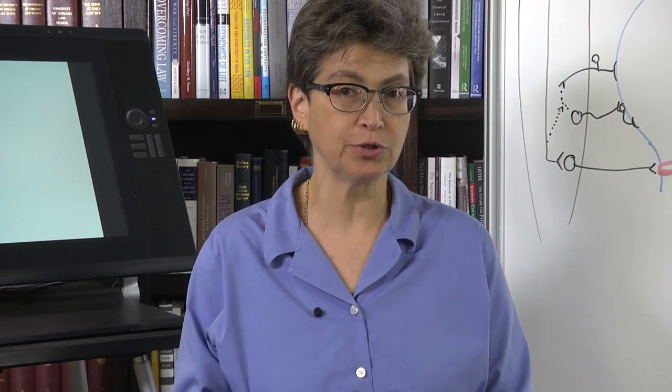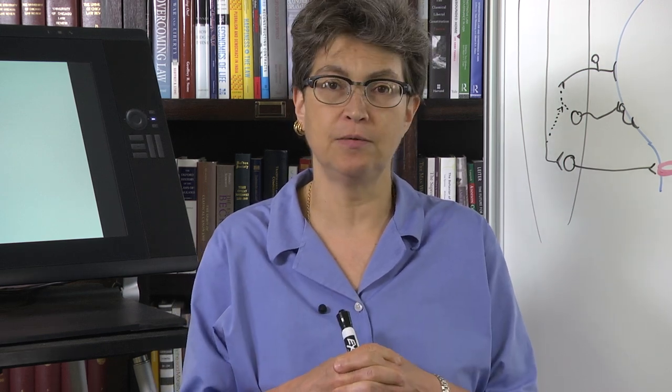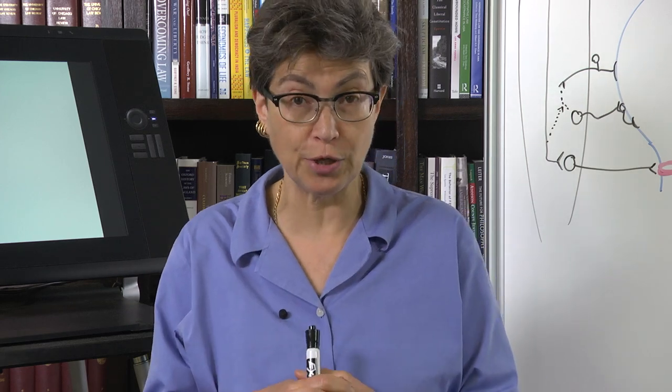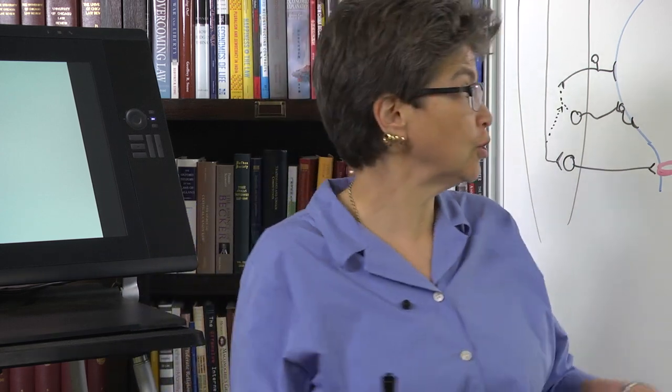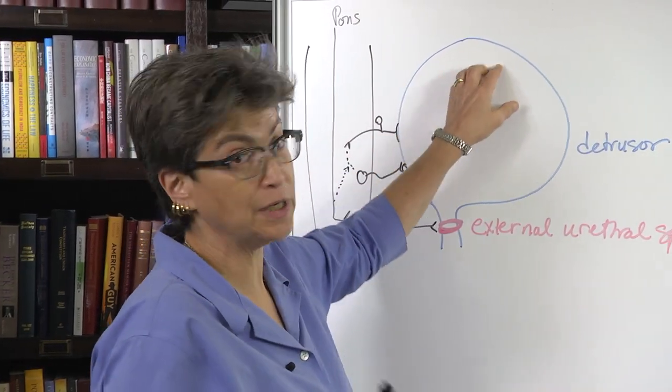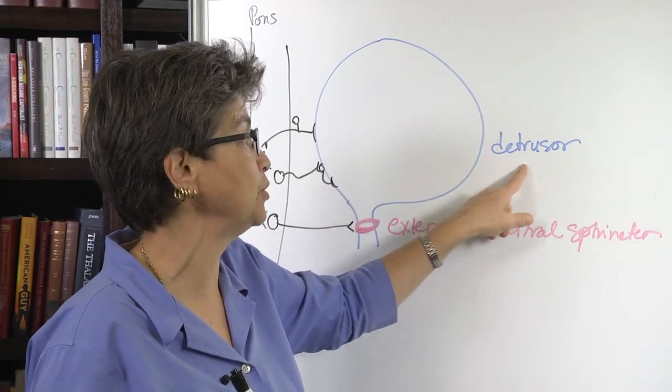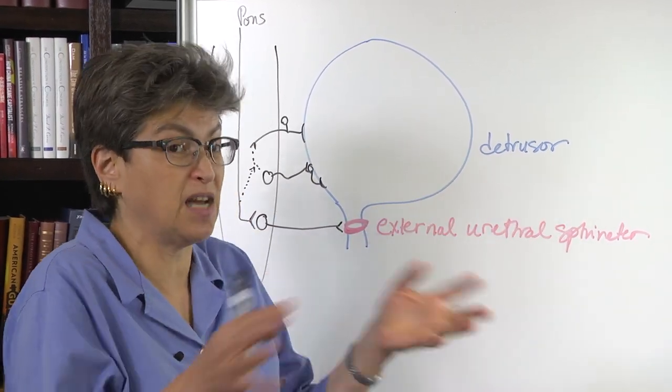So how does micturition work? Well, it is a hand-in-hand cooperation or collaboration between autonomics and skeletal muscle control. So if we look here at the board, this is the bladder. The bladder is a smooth muscle. The smooth muscle of the bladder is called the detrusor. That's the detrusor muscle. That is what makes up the bladder.